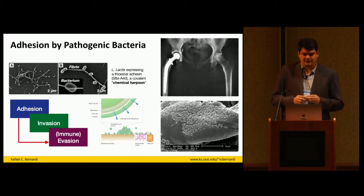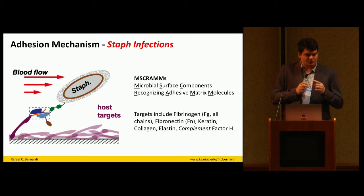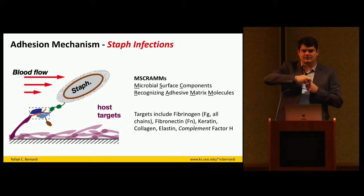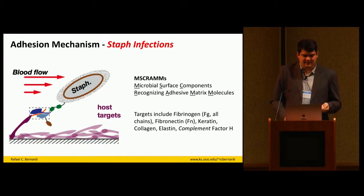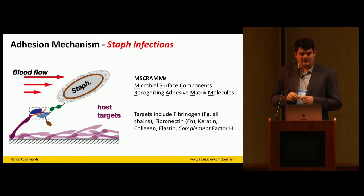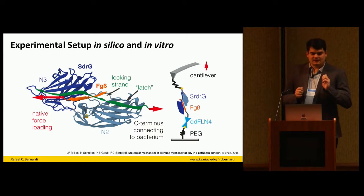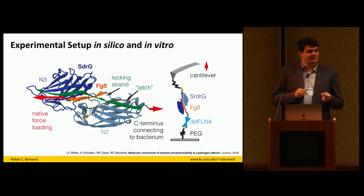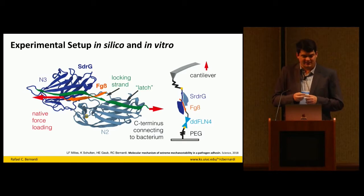How they do that is they use adhesins to target the tails of specific proteins and hold to them very strongly so they cannot be removed by blood flow. Different adhesins can target different proteins — some target fibronectin, some target keratin, some target collagen. The one we studied first targets fibrinogen, which is important because it is part of the blood clotting process — this bacteria can take advantage of that bleeding mechanism.